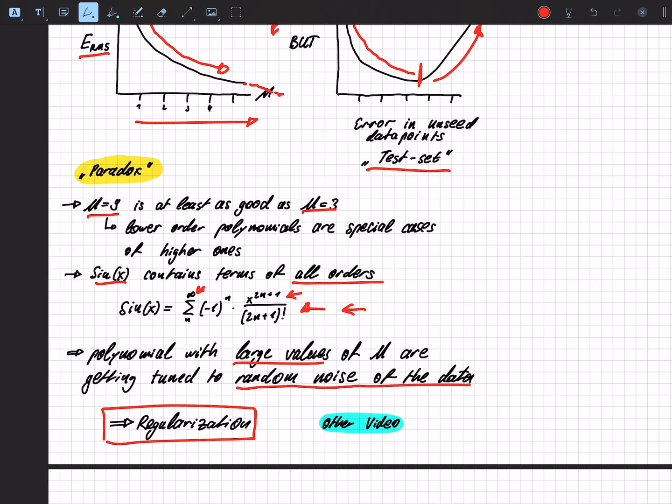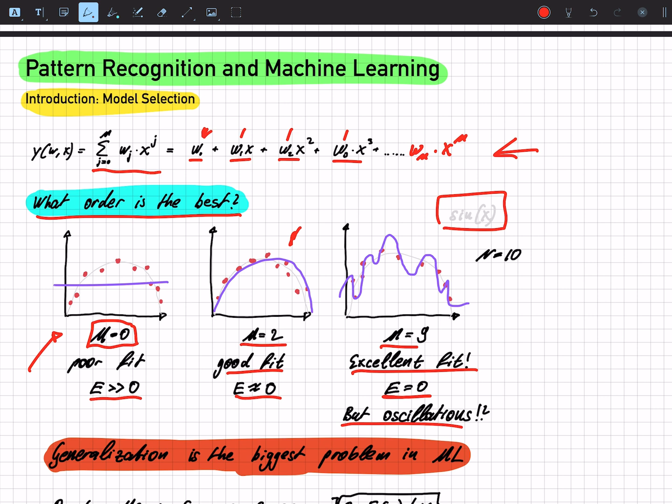So I'll just summarize again. We have our function y, and depending on the degree that we choose from m0 to m9, for example if we have 10 data points, we will get either a bad fit or a perfect fit where our error is zero, but we have those oscillations.